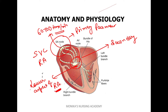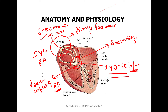If our AV node is working, then the electrical impulses of the AV node are generated at the rate of 40 to 60 beats per minute. Just as the SA node rate is 60 to 100 beats per minute, the AV node rate is 40 to 60 beats per minute.